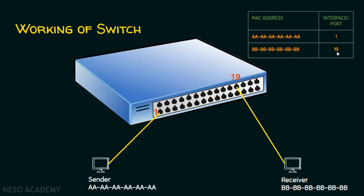The real difference between the working of a hub and a switch is that when the sender sends data to port number 1, if this were a hub, it would broadcast that information to all ports except the receiving port. Since it is a switch, it knows which interface the destination MAC address is connected to, so it forwards the data only to that interface. The receiver computer then receives the packet. Hub floods the entire network whereas switch sends data to the exact destination.